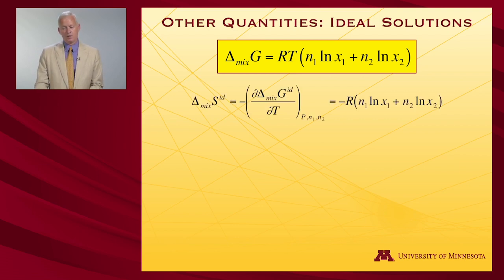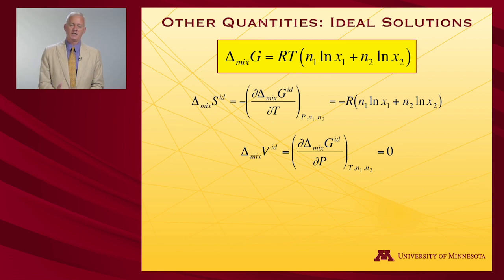The mixing volume for an ideal solution is the partial derivative of the free energy with respect to pressure. When I look at this expression, pressure does not appear, so there is no change in volume to form an ideal solution. You may recall in the last video we saw a case where there was a change in volume. Mixing propanol and water could give rise to a reduction in volume, so that's not an ideal solution. We know that right away. But let's stick with ideal solutions for a little while. We'll get to non-ideal soon enough.